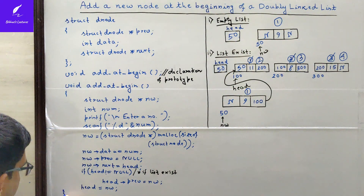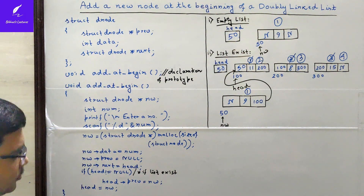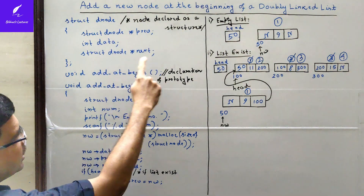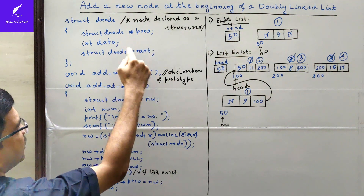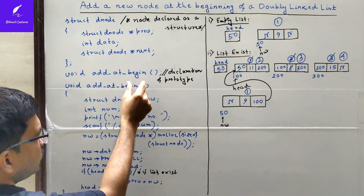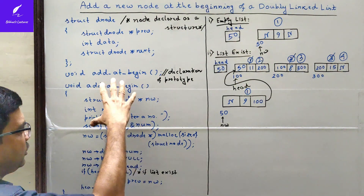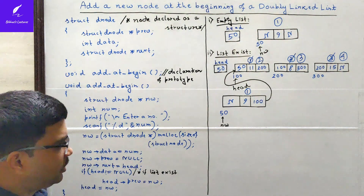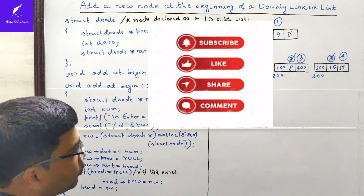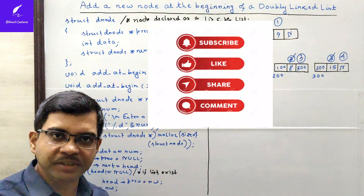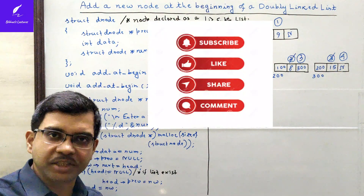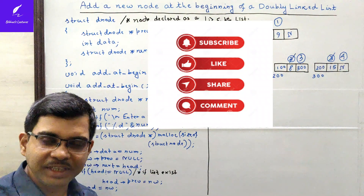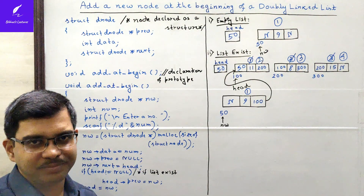So this is the end of the function. To summarize: we declared the structure where each node contains three parts — previous, data, and next. We declared the function prototype and then defined the function. I hope you have understood the concept of inserting a new node at the beginning of a doubly linked list. Thanks for watching, please take care, and have a nice day.